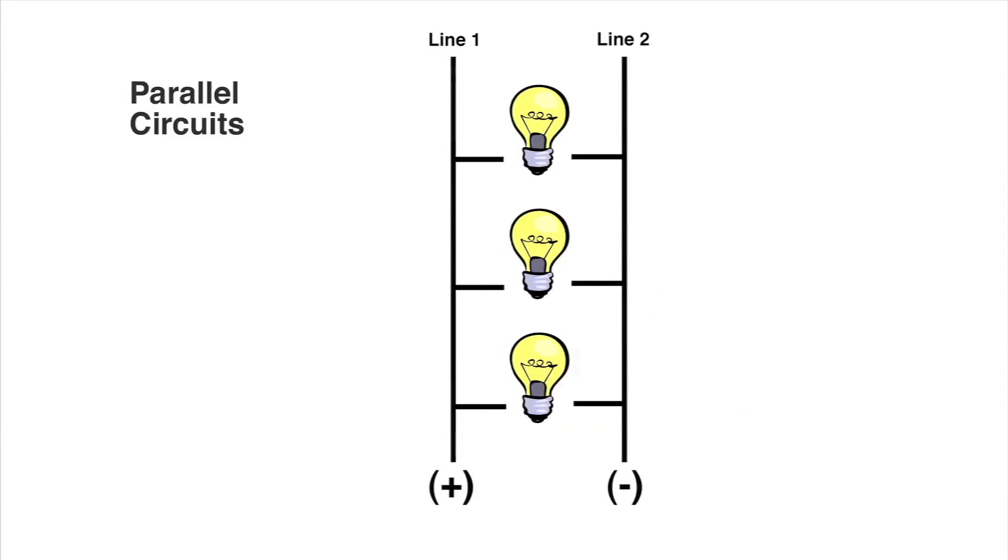For example, in this illustration we have three light bulbs wired in parallel. The bulbs are a 60 watt, a 100 watt, and a 200 watt.